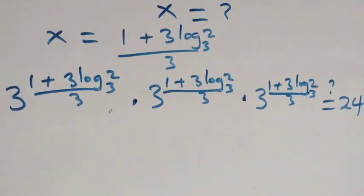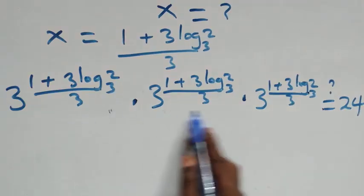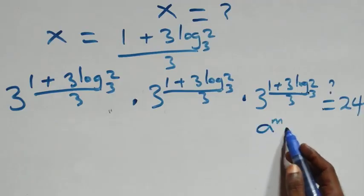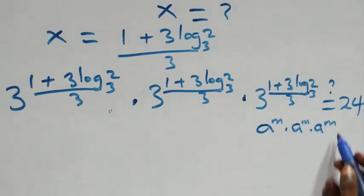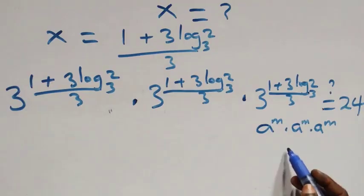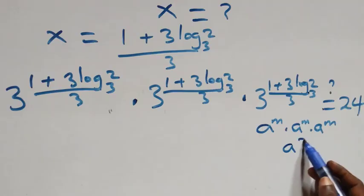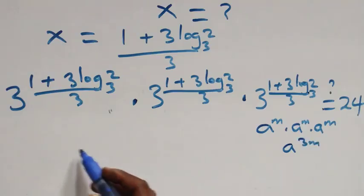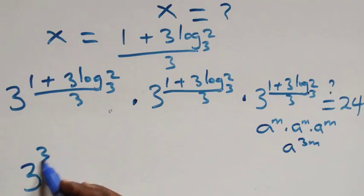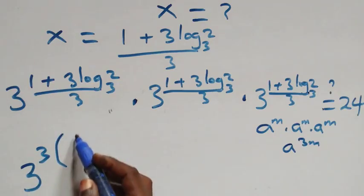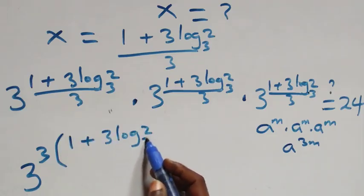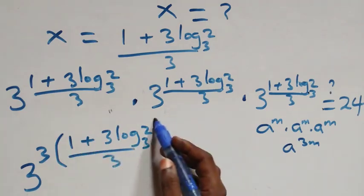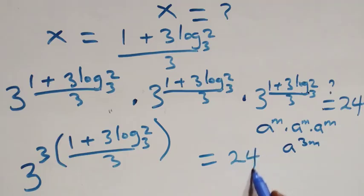Same base multiplying follows: a raised to power m times a raised to power m times a raised to power m equals a raised to power (m + m + m) which is 3m. So what we have becomes 3 raised to power 3 times [(1 plus 3 log₃2)/3] — is this equal to 24 on this side?